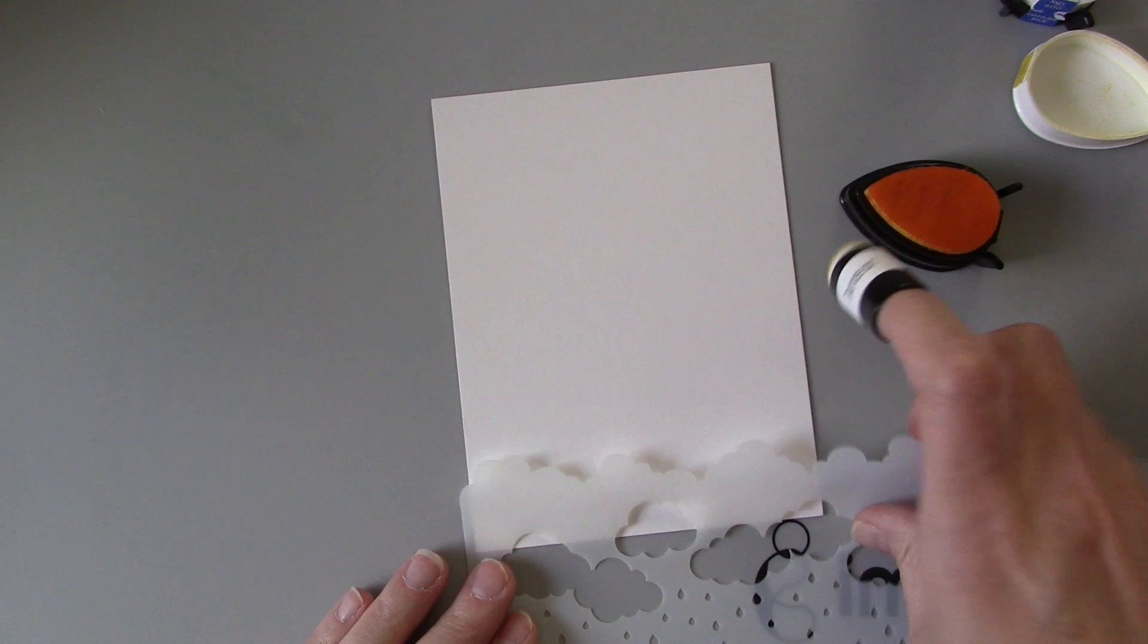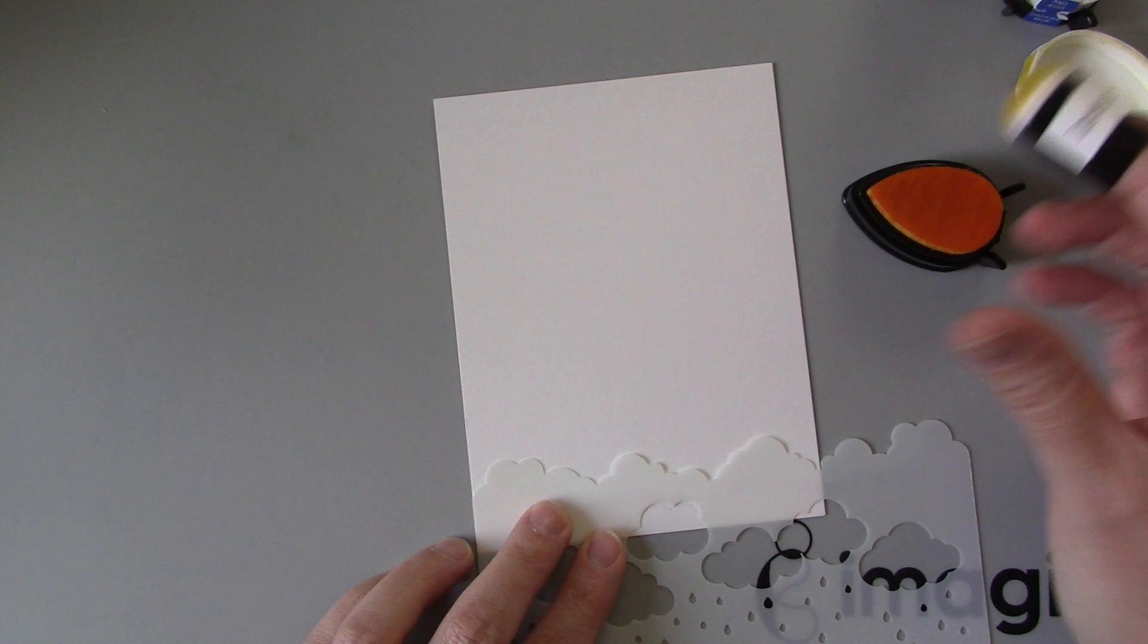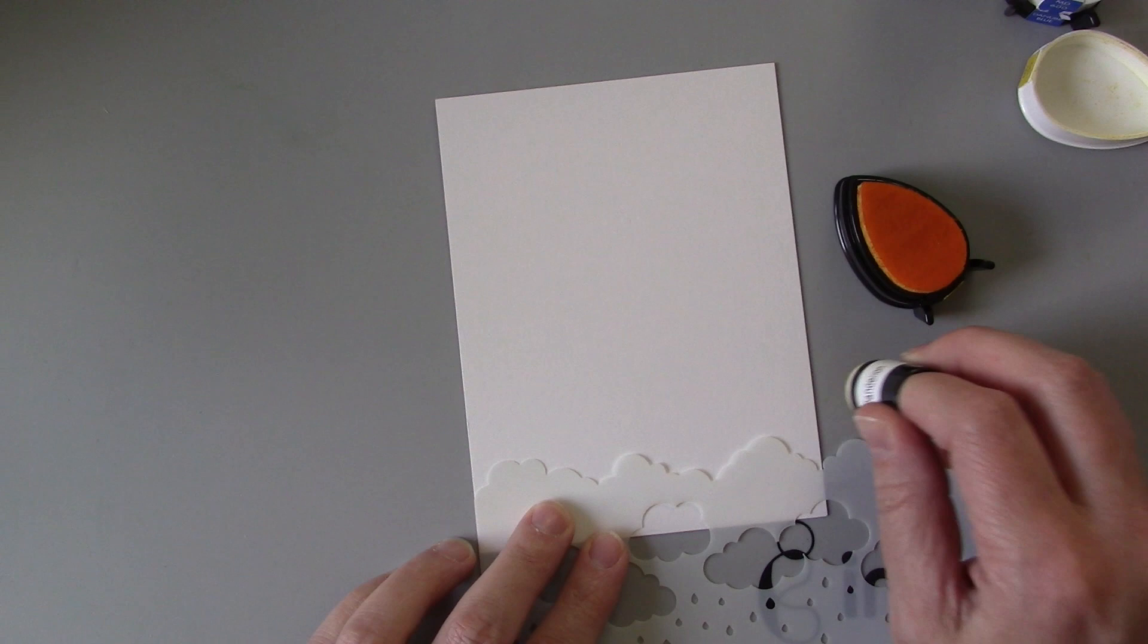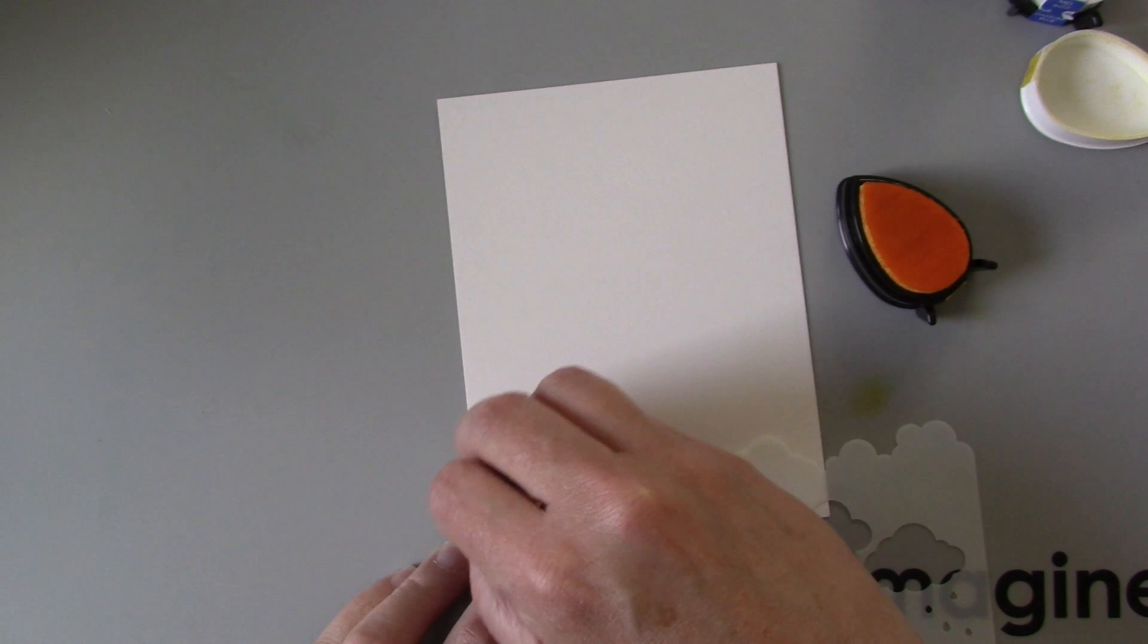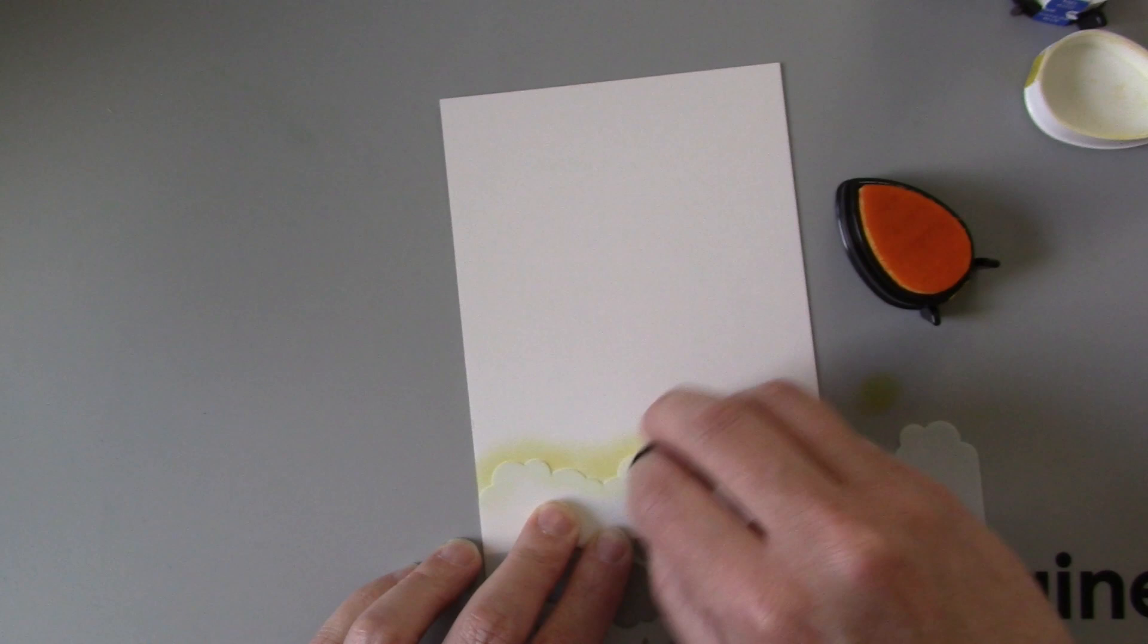First I'm going to start with the dandelion color so when you think of a sky I'm thinking of kind of a Tuscan sunset and so I'm going to start with a yellow at the bottom indicating that the Sun is closest to the ground and all I do is take my sponge dauber dip it into my memento ink to pick up the color on the dauber and then I simply smush that into my paper kind of in a round pattern.